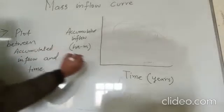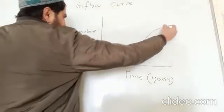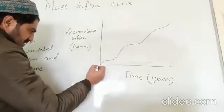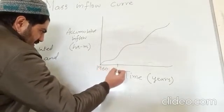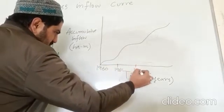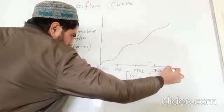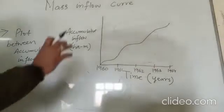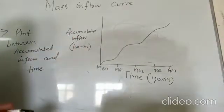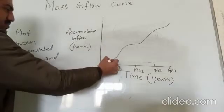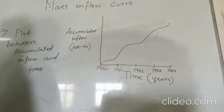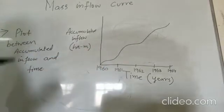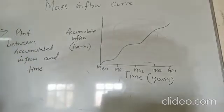The mass inflow curve is always a rising curve — it will look something like this. For example, plotting this curve for years 1960, 1961, 1962, 1963, and 1964. This mass curve is always a rising curve. The slope will never fall; it can be a horizontal line, but it can never decrease.